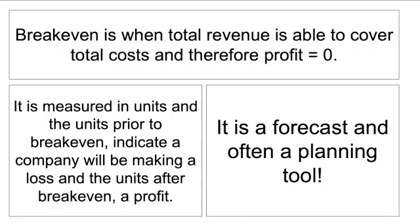To begin with breakeven: breakeven is when total revenue is able to cover total costs and therefore profit equals zero. Units prior to breakeven indicate a company is making a loss because they've not covered their total costs with their total revenue yet. Units after breakeven suggest that total revenue has exceeded total costs, so now they'll be generating a profit.